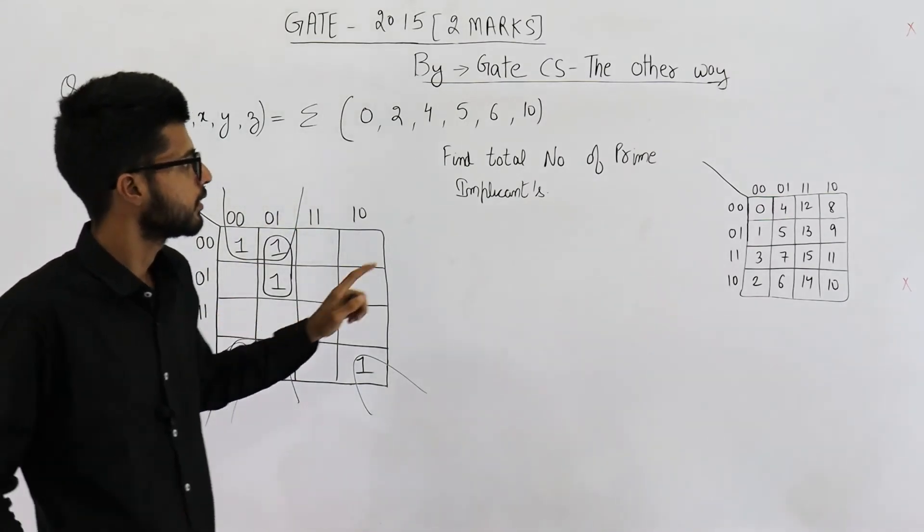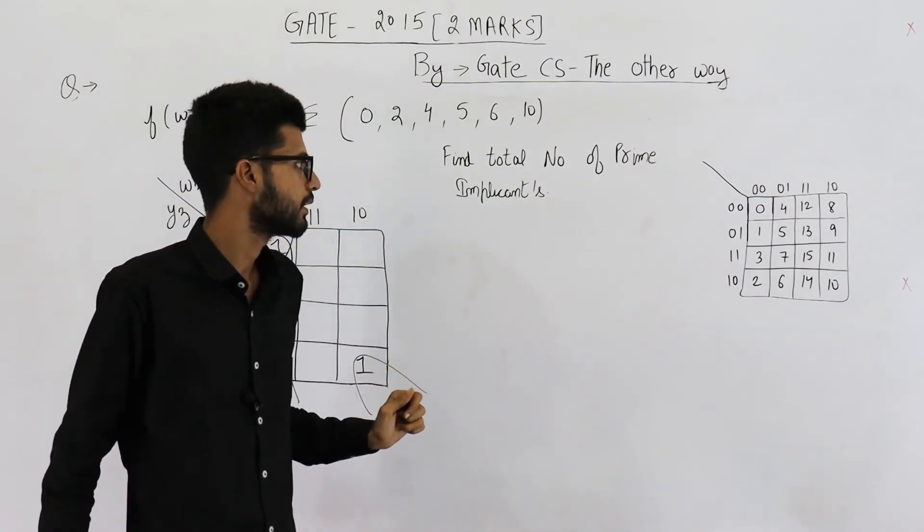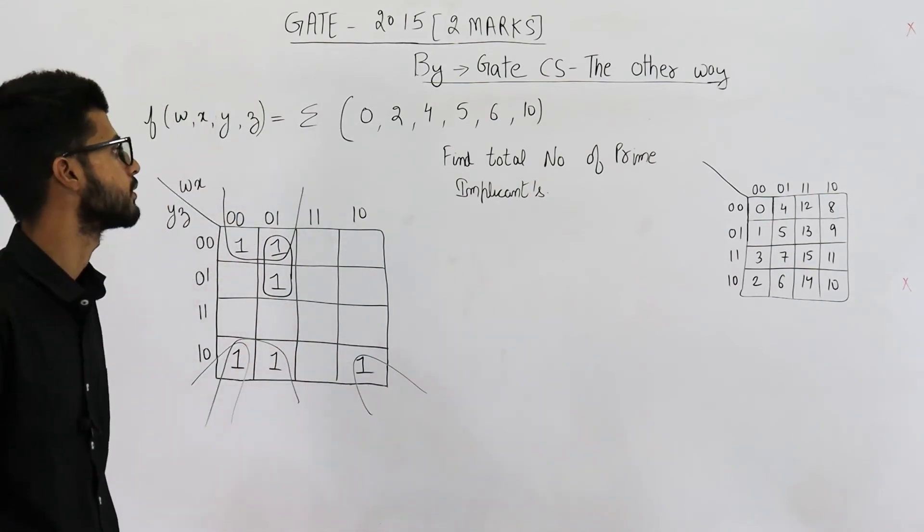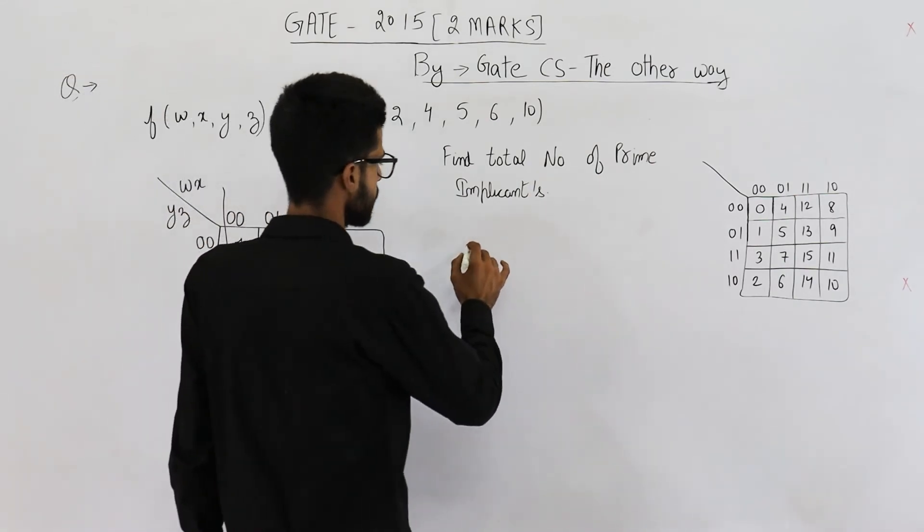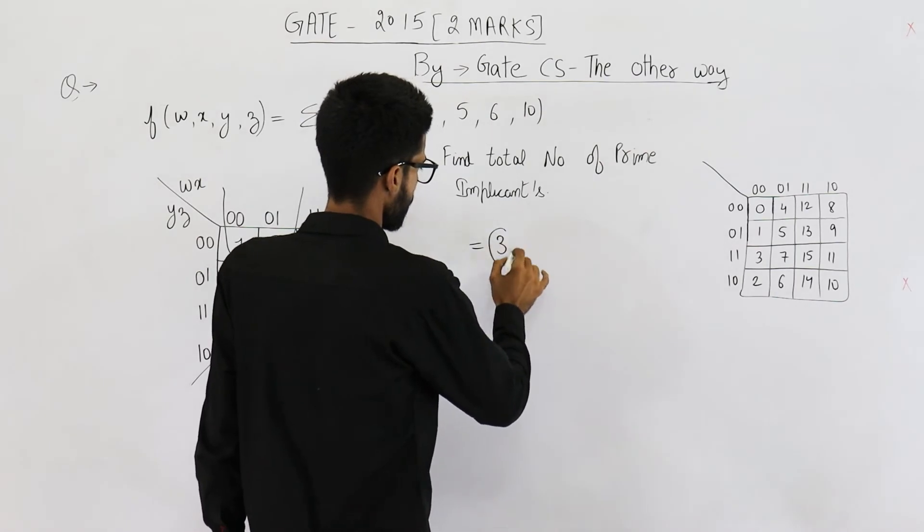So they were asking the total number of prime implicants. You can see there are 3 prime implicants. Answer to this question is 3.